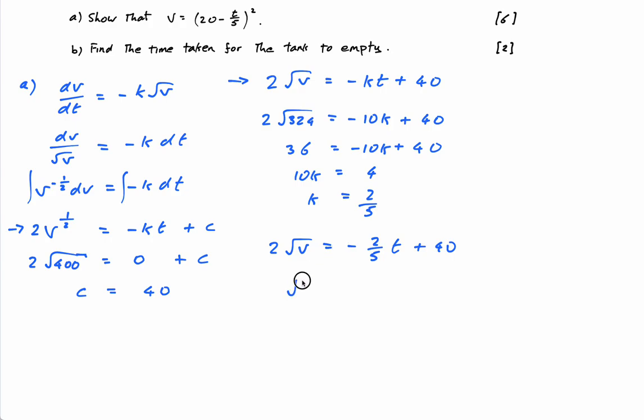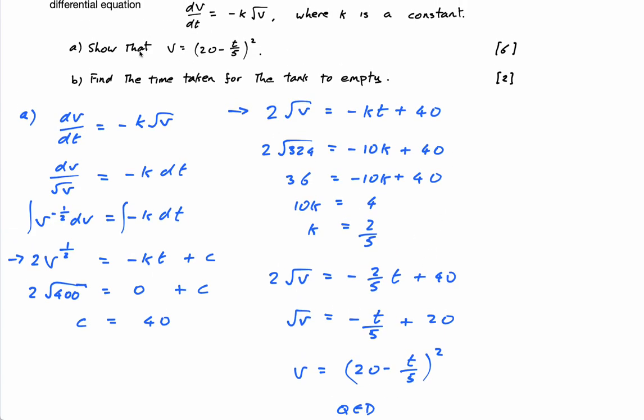Let me just go down a bit. So I have the square root of V is equal to, divide across by 2. That gives me minus T over 5 or 1 fifths plus 20 and then square both sides and we're going to get exactly what we want here. So V is equal to 20 minus T over 5 squared. QED. Okay, done. That is what he asked us to show.